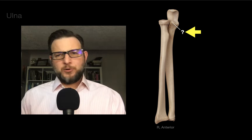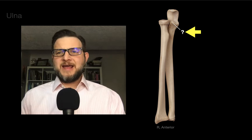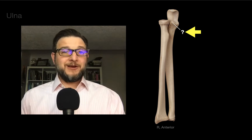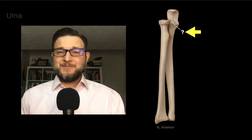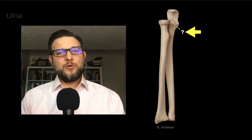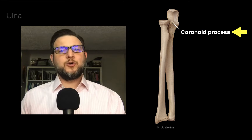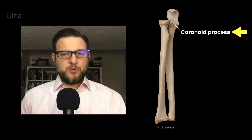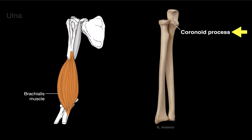Next is this process that anatomists said looked like a hook — and because it looked like a hook, the word is coronoid. So they call it the coronoid process, which serves as an insertion for the brachialis muscle that helps to flex the elbow.